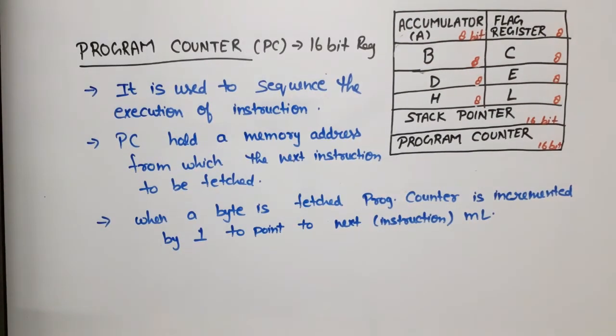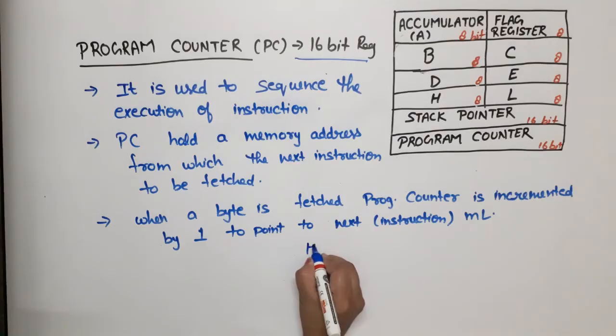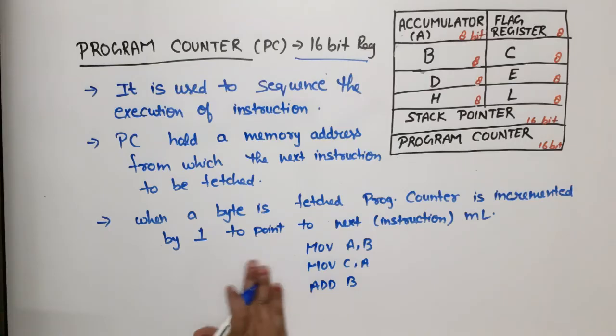Next is program counter. Program counter is also a 16-bit register. Why 16-bit? Basically, program counter holds the address of the next instruction to be fetched. Suppose I have written a program: MOV A,B at 2001, MOV C,A at 2002, then ADD D at 2003. Suppose this line is being executed.